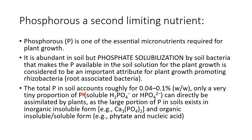The total phosphorus in soil accounts for roughly 0.04 to 0.1 percent, and only a very tiny proportion of that phosphorus is in soluble form which can directly be assimilated by plants. A large proportion of phosphorus in soil is in organic insoluble form, and thus bacteria play a very important role in converting that phosphorus into soluble one.